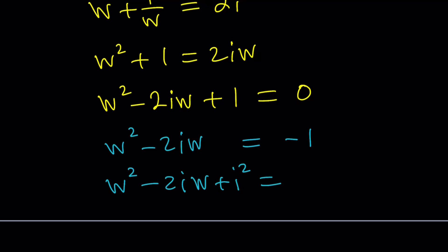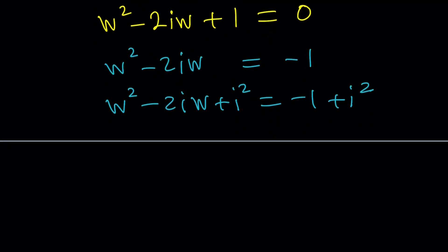Because guess what? That's going to give you a perfect square on the left hand side. Isn't that perfect? This is w minus i squared. And the right hand side is negative 1 minus 1, which is negative 2. Awesome.